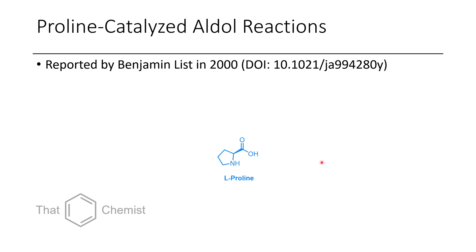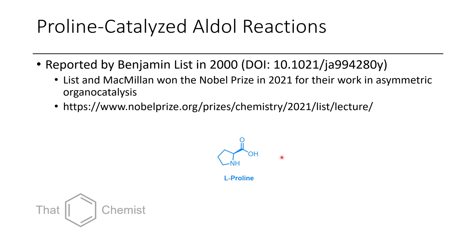Next, I want to talk about the proline-catalyzed aldol reaction. This was originally reported by Benjamin List in 2000 — initially using a stoichiometric amount of proline — and a year later in Tetrahedron Letters he reported a catalytic version requiring about 20% catalyst loading. It's worth noting that this past year, Ben List and David MacMillan won the Nobel Prize for their work in asymmetric organocatalysis. While List reported work with proline, MacMillan developed catalysts called imidazolidinones, which are similar in forming iminium ions but provide better selectivity, though they need to be generated beforehand rather than in situ.